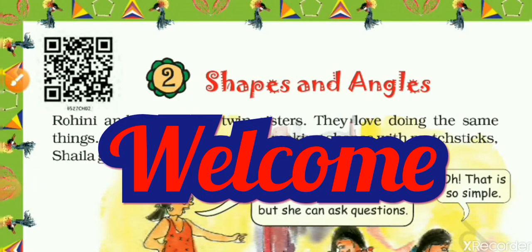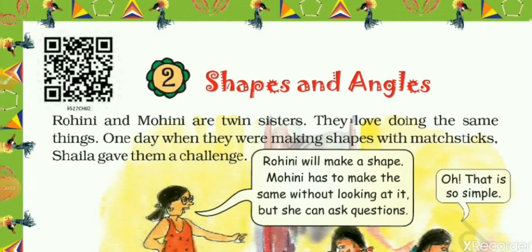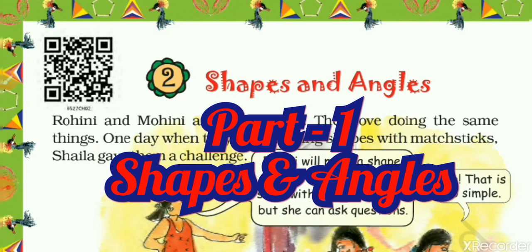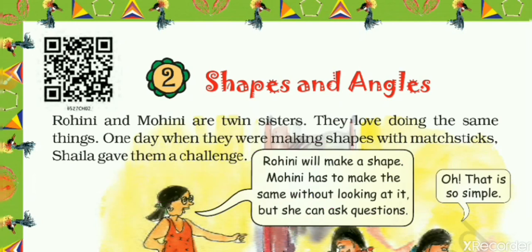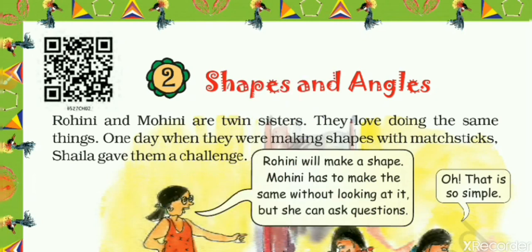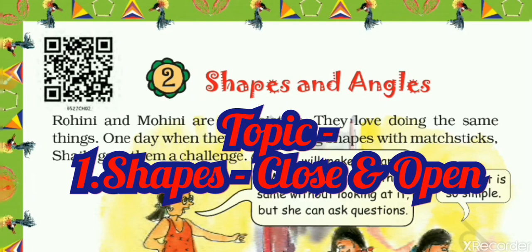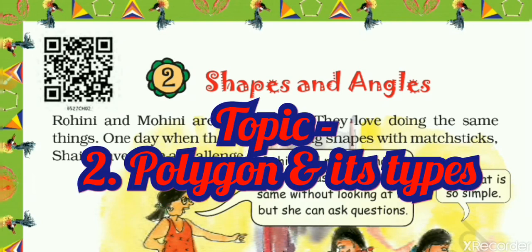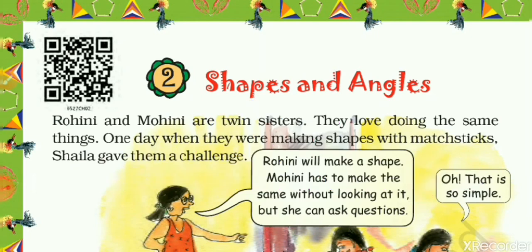Hello, my dear friends, and once again welcome back to this online class video. This is the first part of our new chapter, which is Chapter 2: Shapes and Angles. I am Jay Pregas. Let's start the class. At first, let's have an overview of today's class — what topics we will cover. The first topic is shapes: closed shapes and open shapes, and the second is polygons and their types.